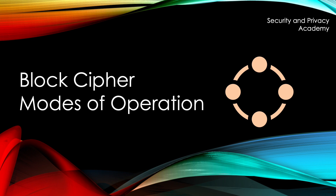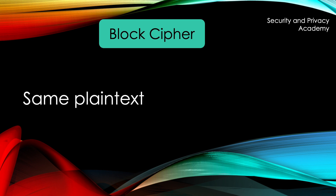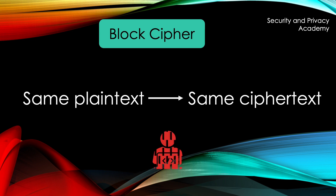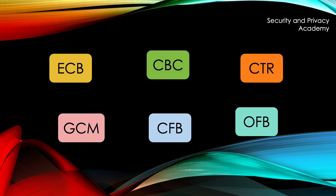To shortly introduce why we're dealing with modes of operations in the first place: when we're encrypting block ciphers, we run into the problem that same plaintexts encrypt into same ciphertexts. An attacker can therefore use this to his advantage in order to break the encryption. A mode of operation therefore takes care of a series of blocks, which are then dependent on each other to add diffusion to the encryption process. That means that the structure of equal plaintexts is going to be diffused. In this, probably a bit longer video, we'll look at each of the six modes of operation.